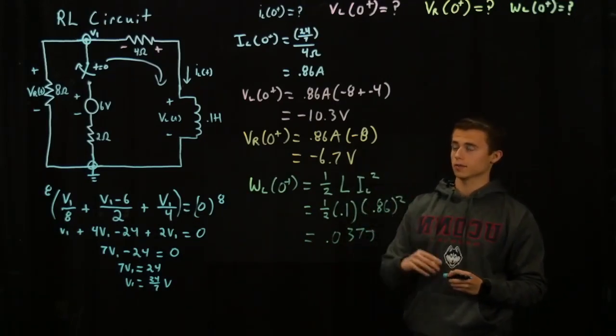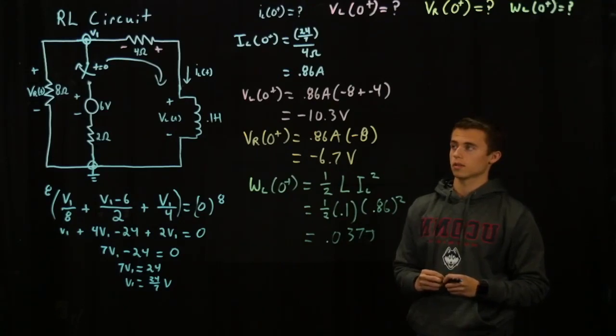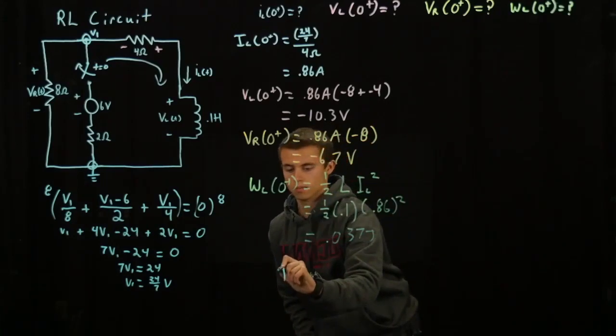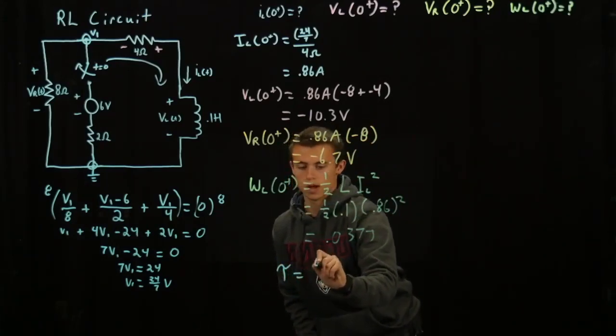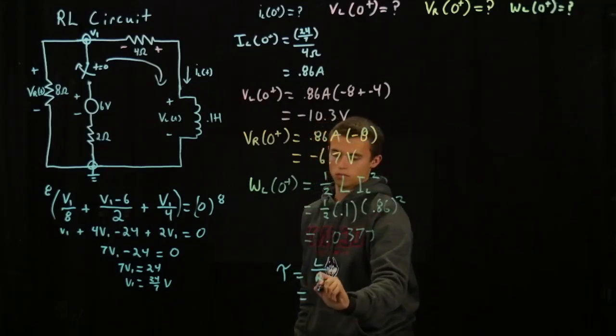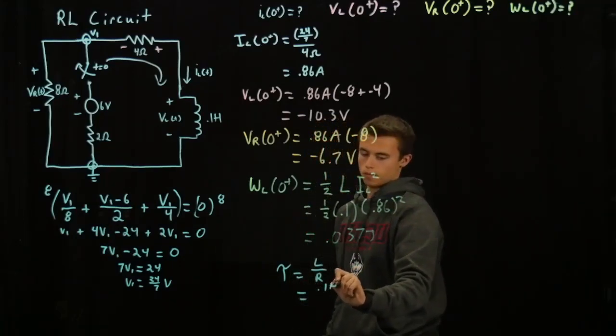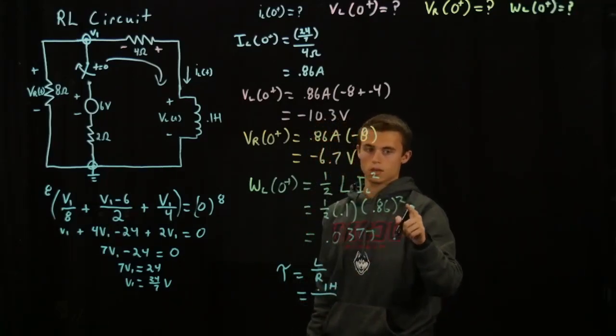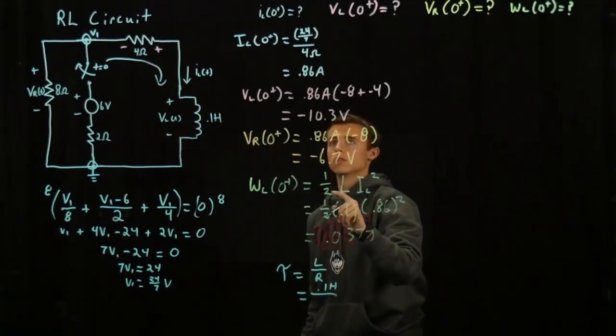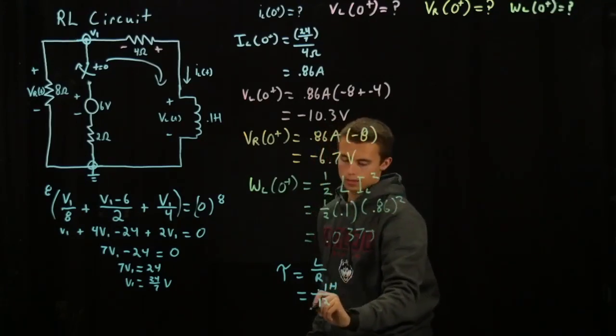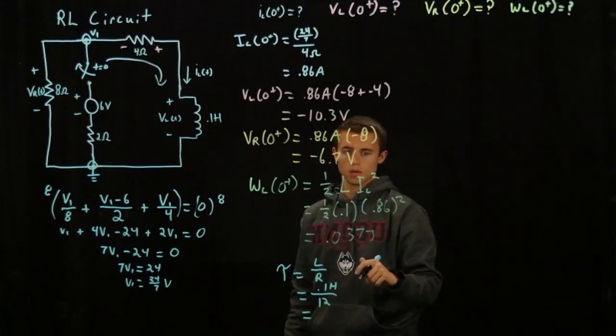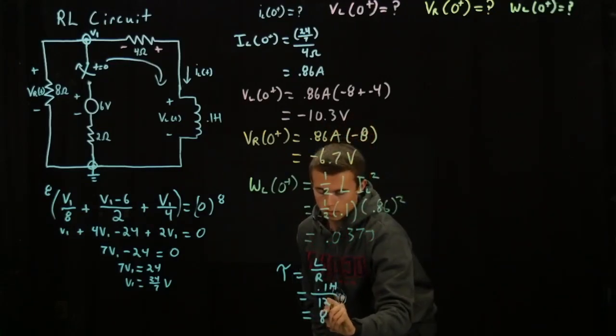And the time constant for an RL circuit is the inductance over resistance, L over R. So tau is equal to L over R, in our case 0.1 Henry over the 12 ohms in the circuit. And this gives you 8.3 milliseconds.